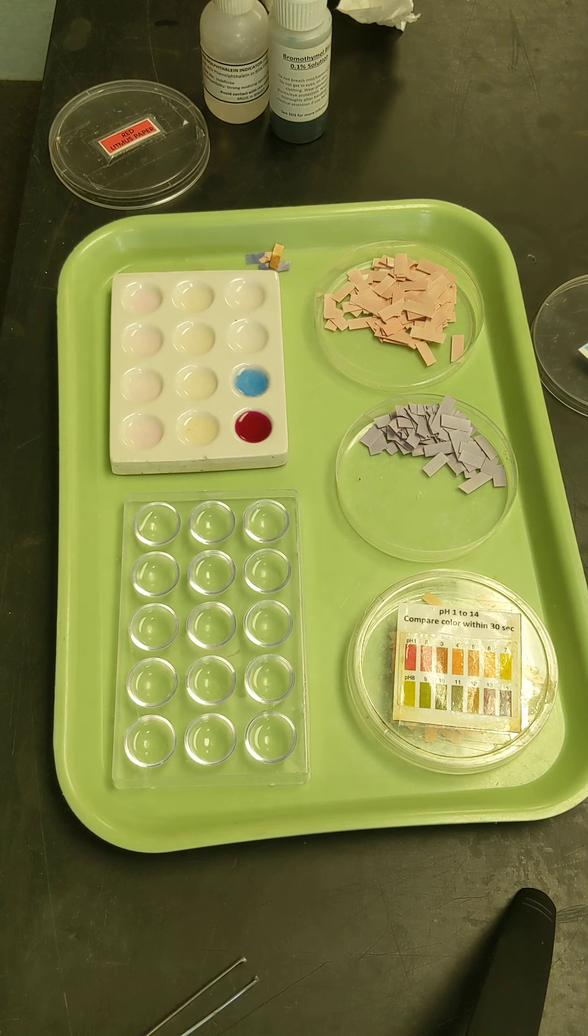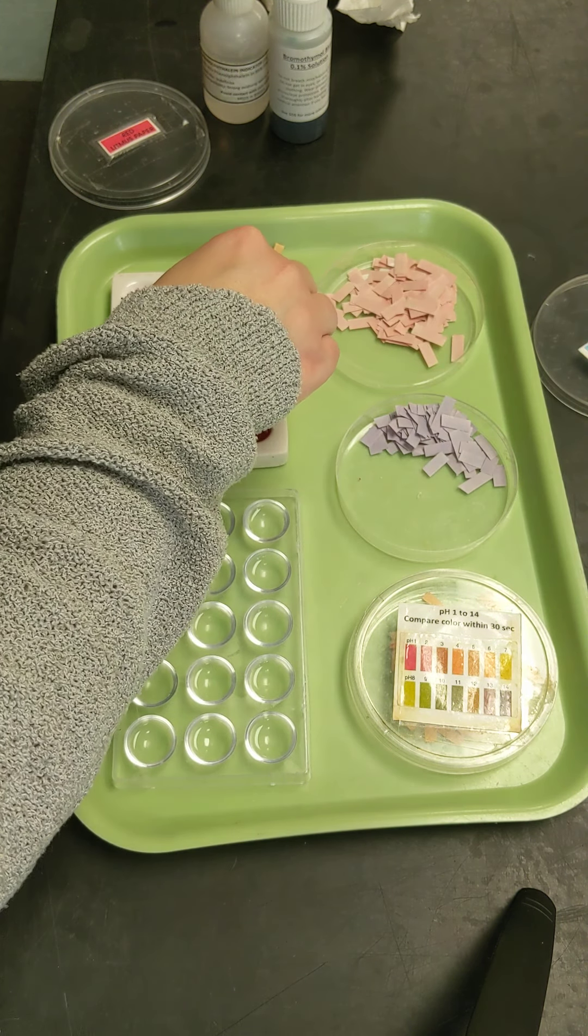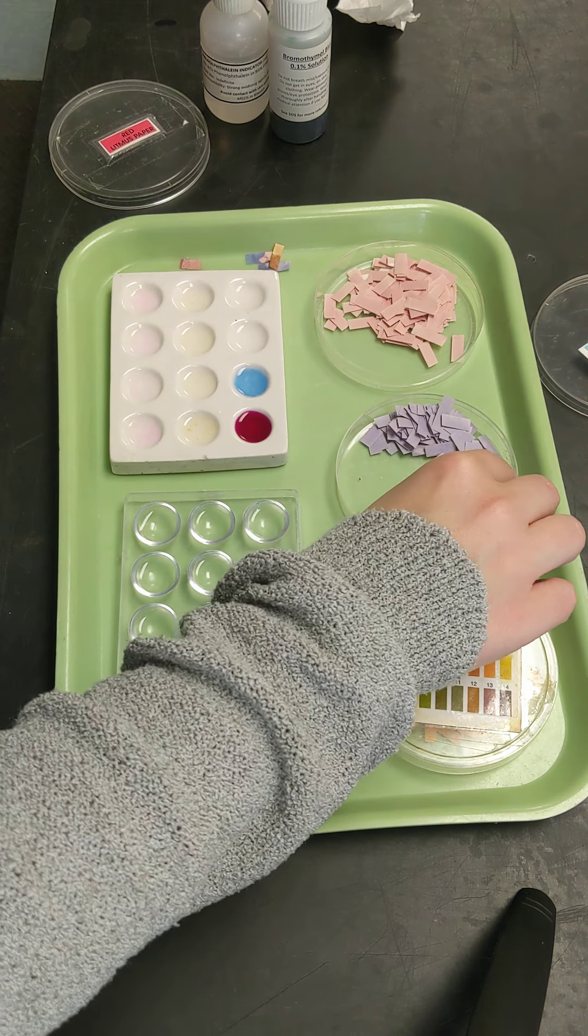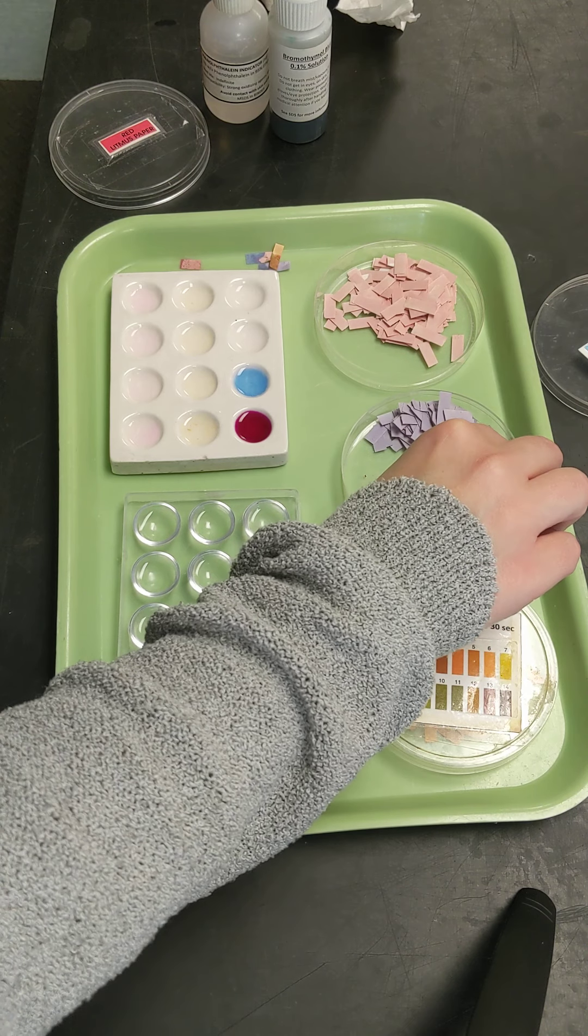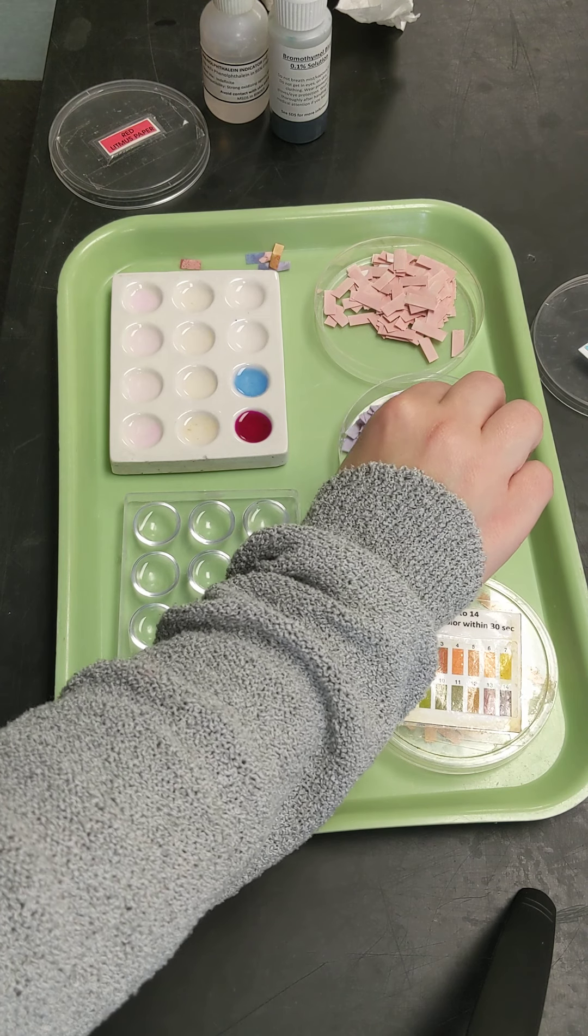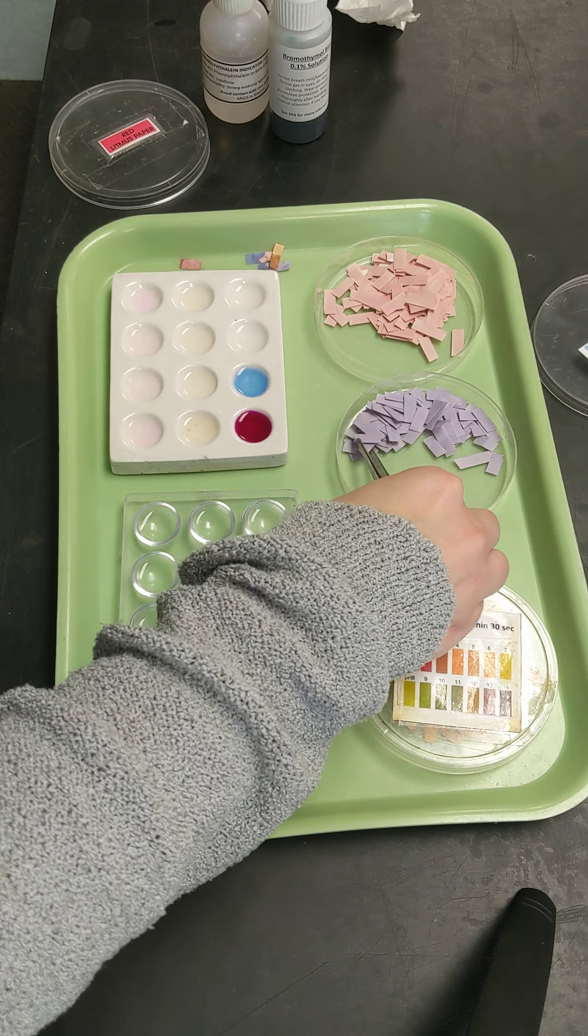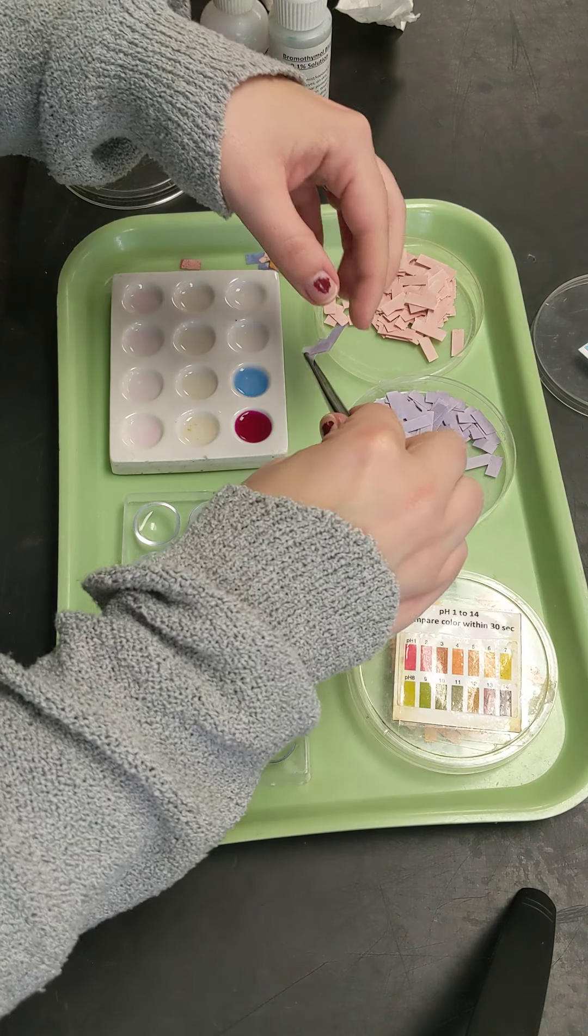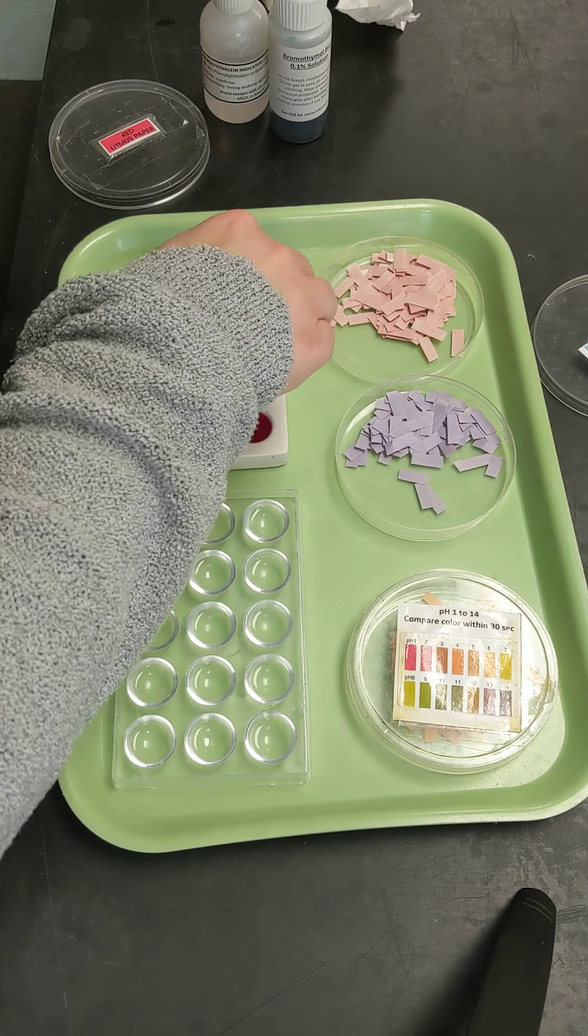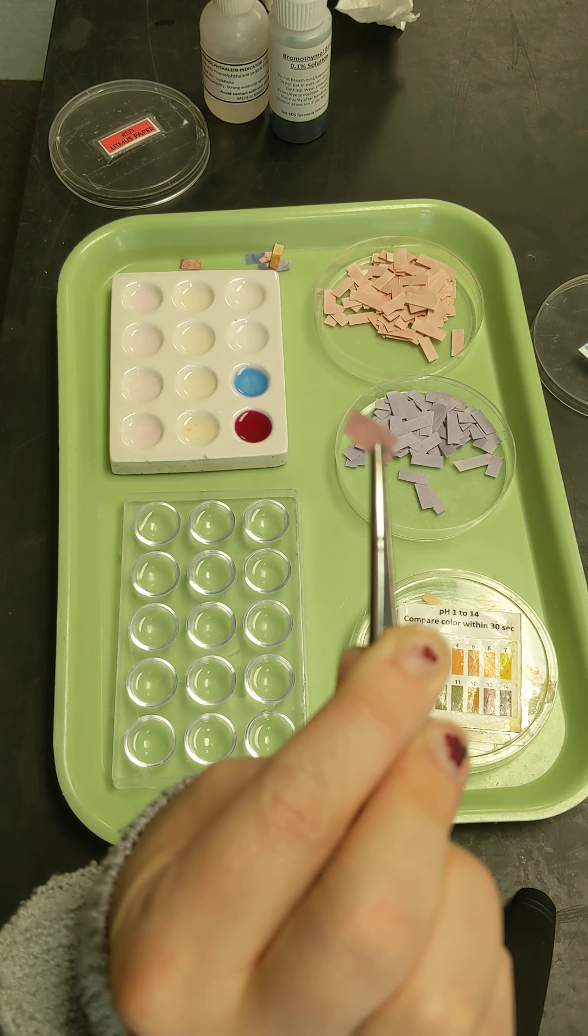And now we're going to look at the rest and see if we can find acids and whatnot. So I'm going to grab another piece of litmus paper. No change. So red stays red if it's an acid. So let's see what happens when I grab blue litmus paper.